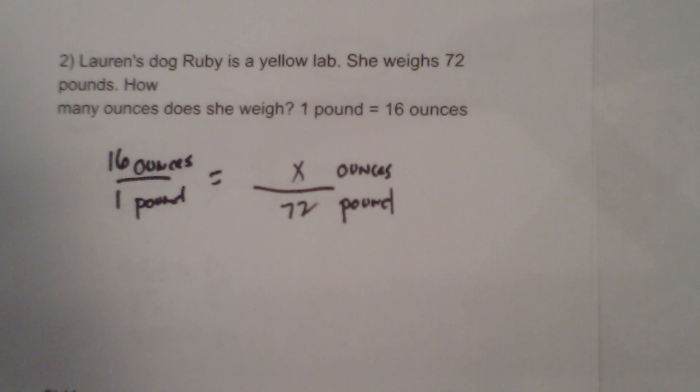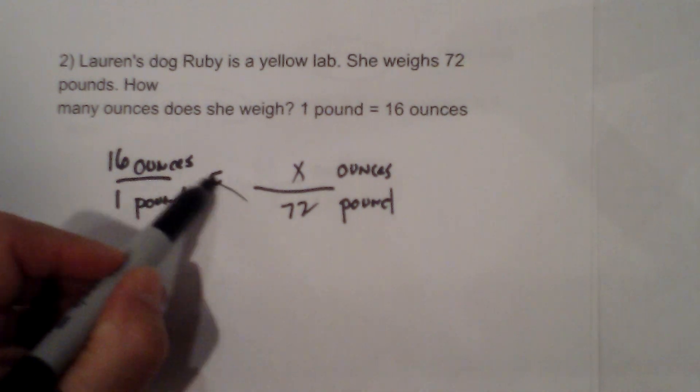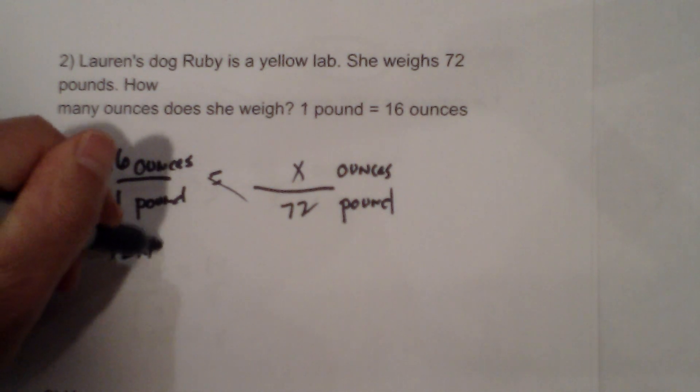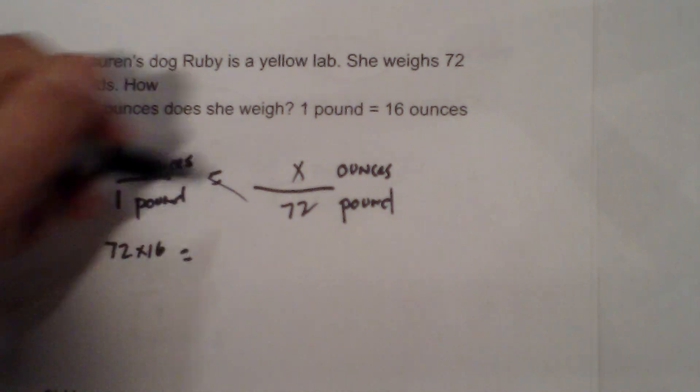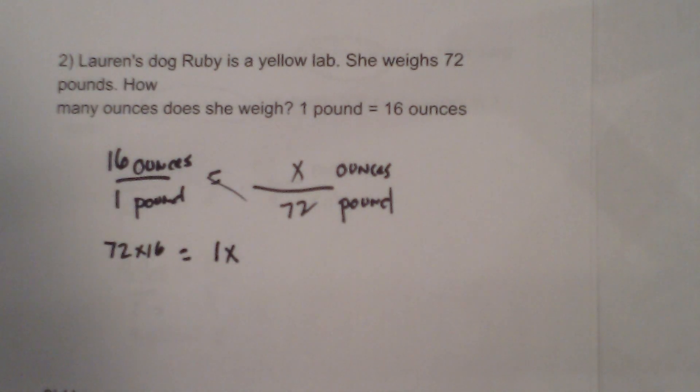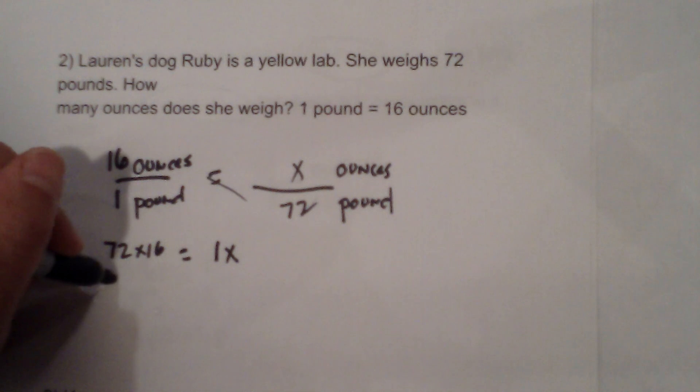So now we do a cross product. 72 times 16. I'll write that out. 72 times 16 is equal to 1x.